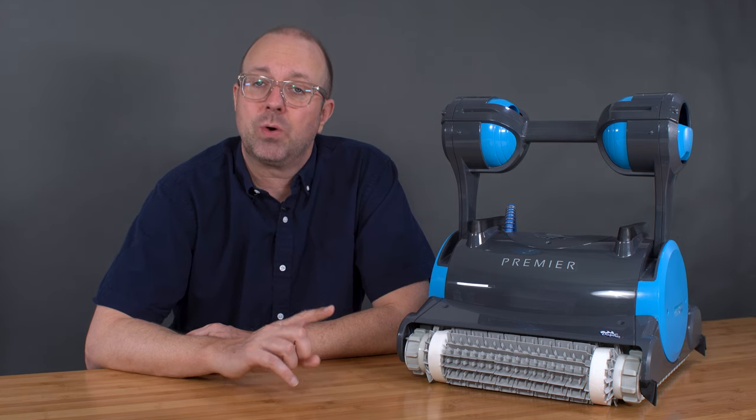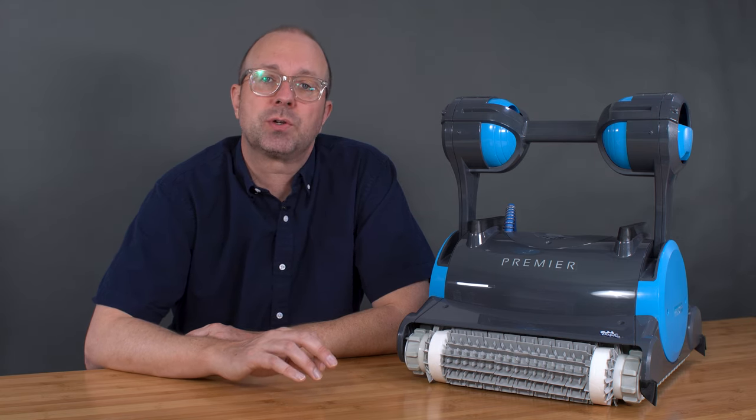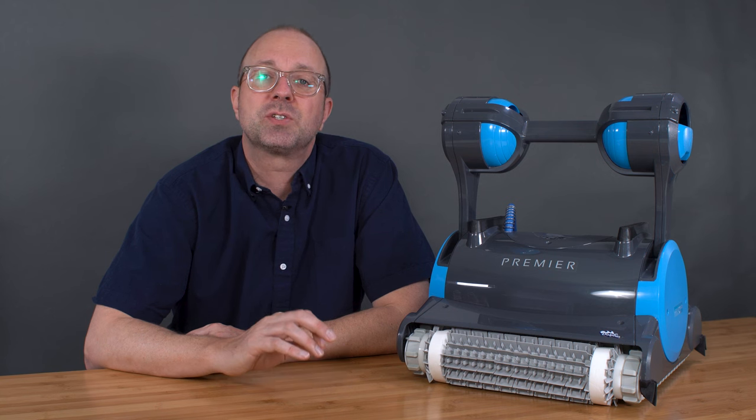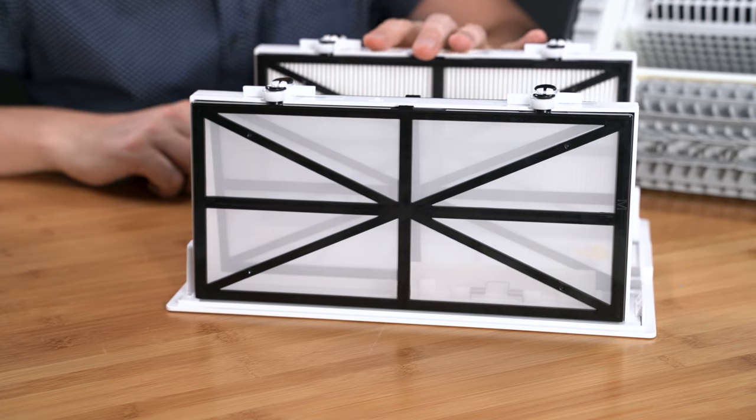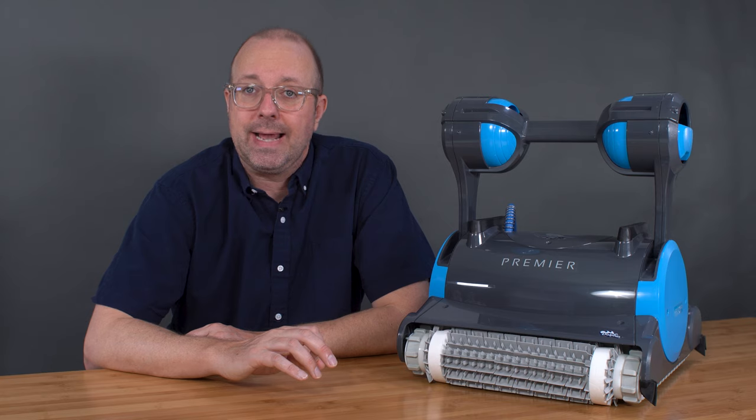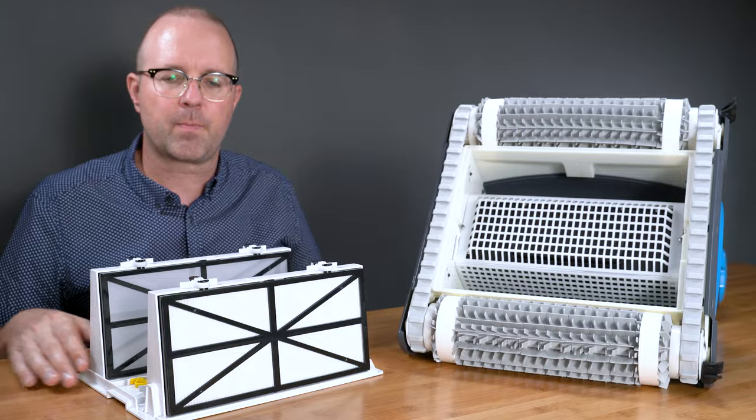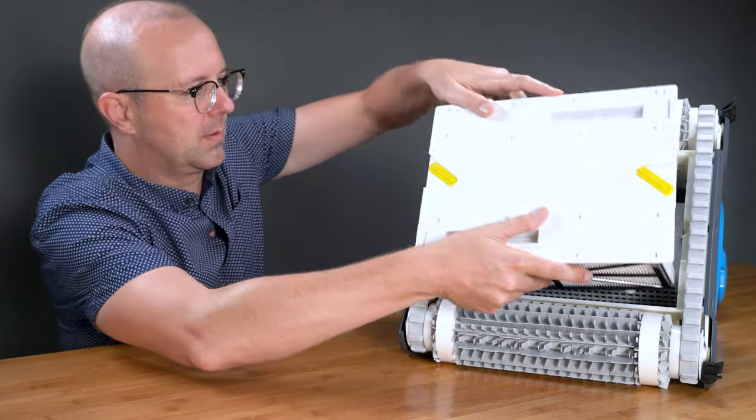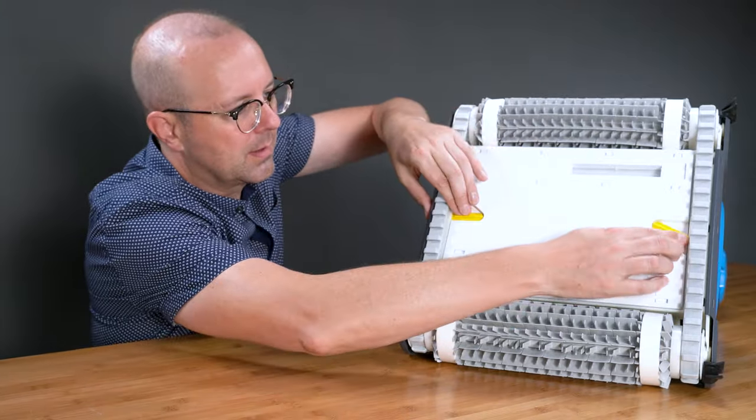Multimedia. Practically every other robot has one, sometimes two filters included. But Premier has four options. It has the standard fine filter, the nano filter, an oversized leaf bag, and a disposable debris bag. Not to mention, it only takes a few seconds to quickly swap options.